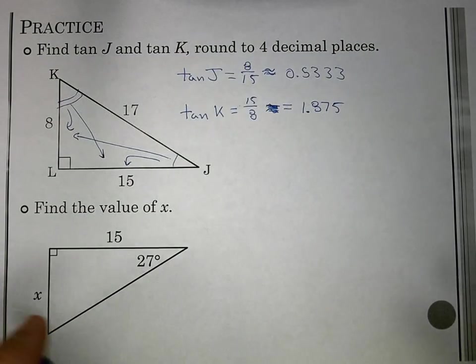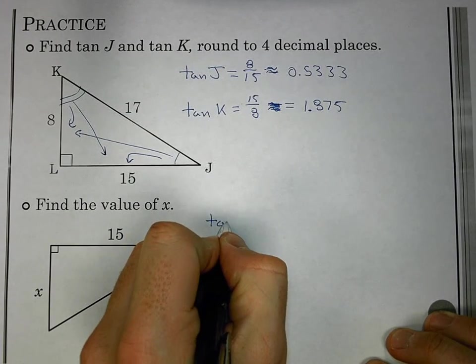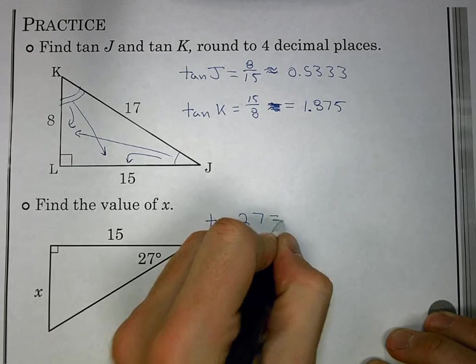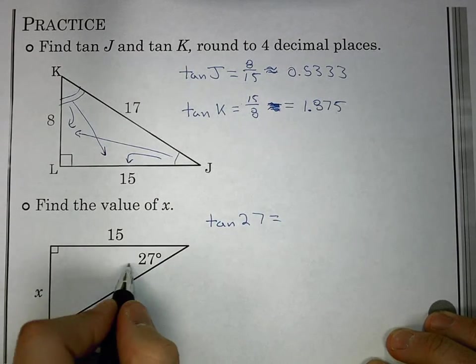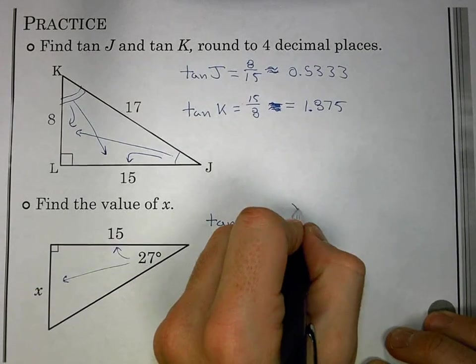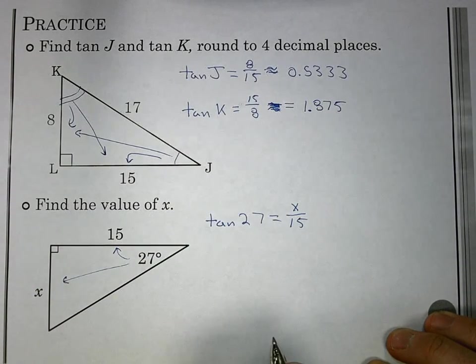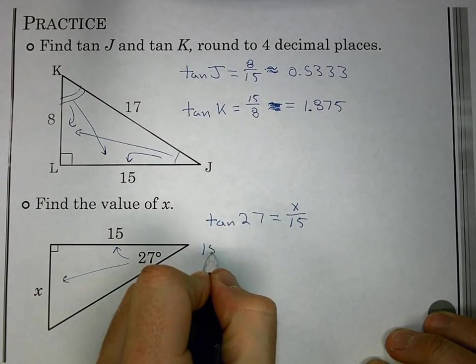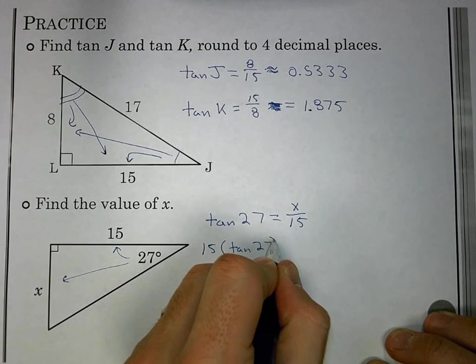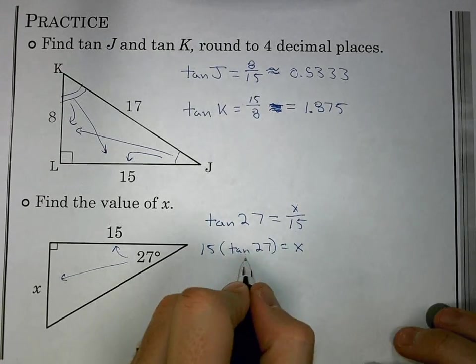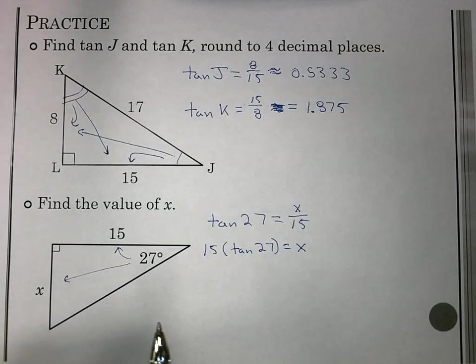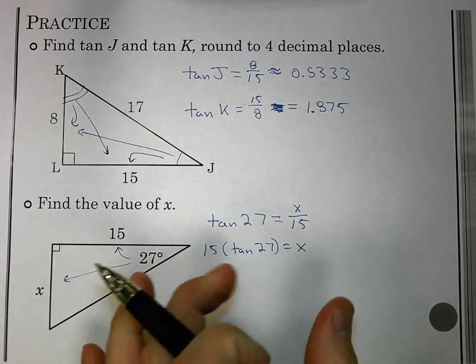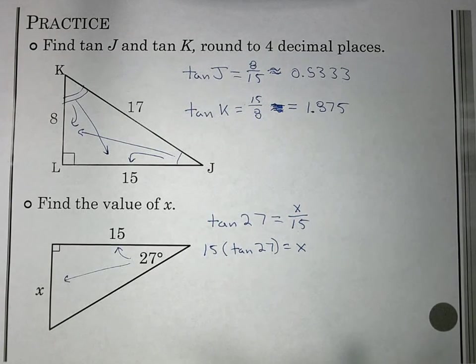Now we've gotten to another one where we actually have to solve for that x using that tangent value. I'm going to say tangent of our angle, 27, equals the opposite over the adjacent, x over 15. I'm going to solve for x. I want to get x by itself. It looks like I can multiply both sides by 15. Be careful here. Tangent of 27 is still a value. You're not going to multiply 15 and 27. You need to simplify that tangent of 27 as a decimal first.